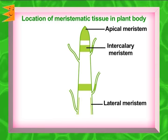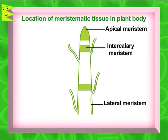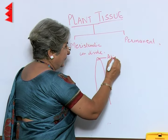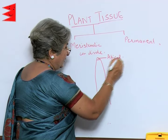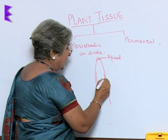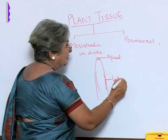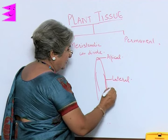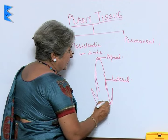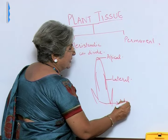If we take a plant, at the tip is the apical meristem, on the sides is the lateral meristem, and at the base of the node is the intercalary meristem.